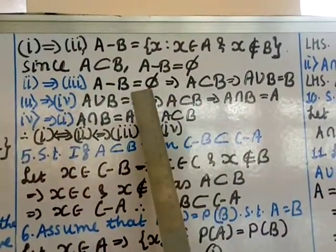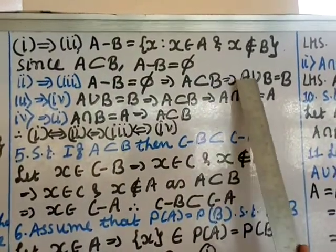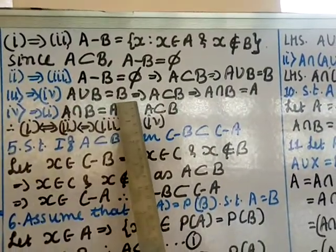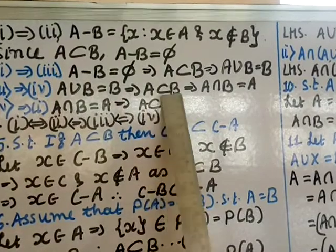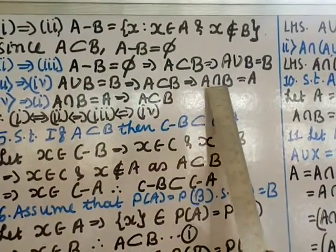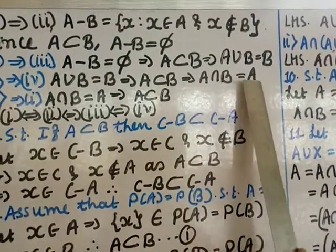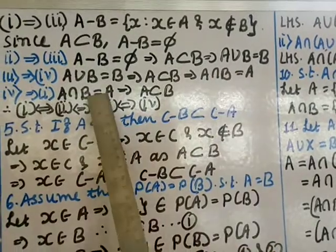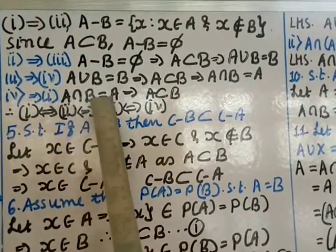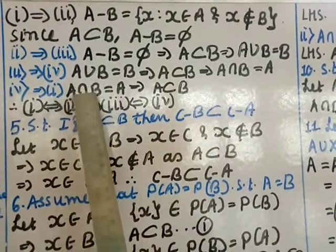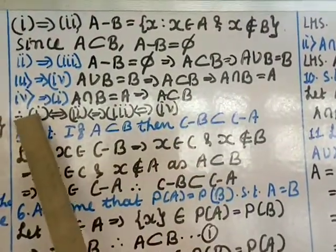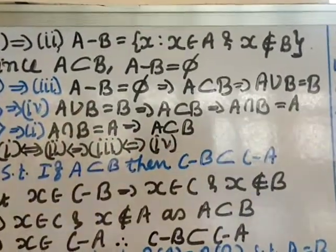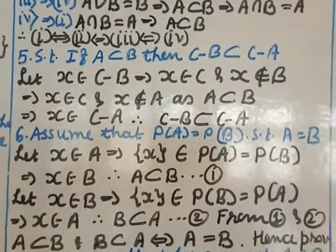(2) implies (3): A - B = ∅ means A ⊆ B, so A ∪ B = B. (3) implies (4): A ∪ B = B implies A ⊆ B, so A ∩ B = A. (4) implies (1): A ∩ B = A means every element of A is in B, i.e., A ⊆ B. So (1) ⟺ (2) ⟺ (3) ⟺ (4), hence all four conditions are equivalent.